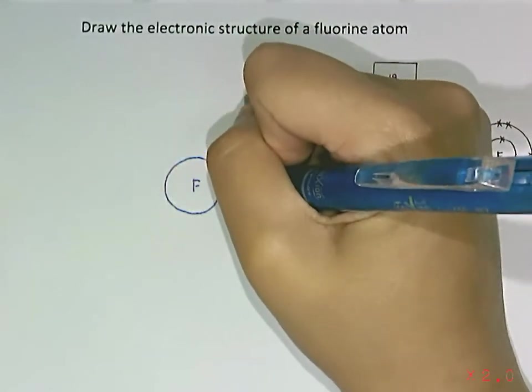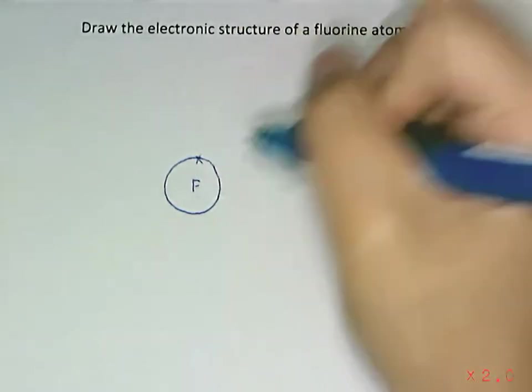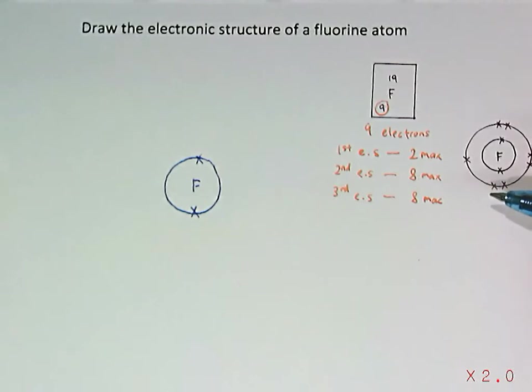And I'm going to draw a circle, which is its first electron shell. I'm going to put in 2. I'm going to use crosses for the electrons of non-metals.